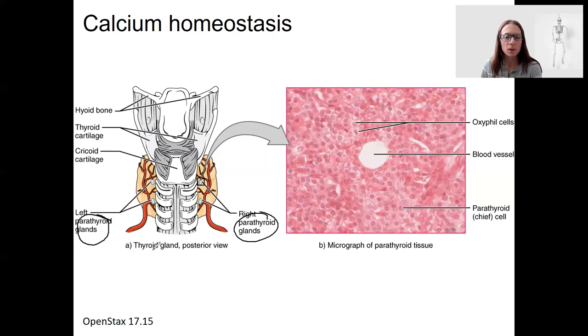The parathyroid glands, which are located on the thyroid gland, on the trachea. This is what the parathyroid tissue looks like.